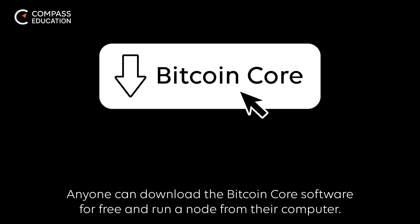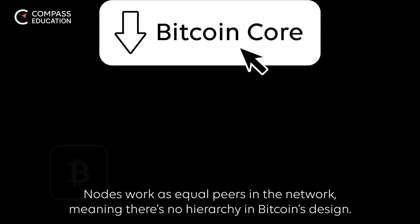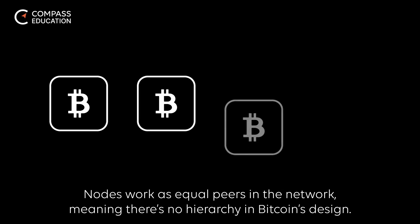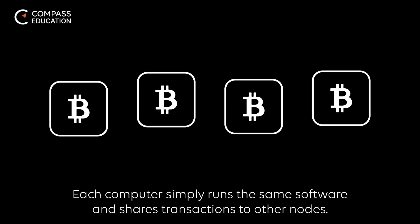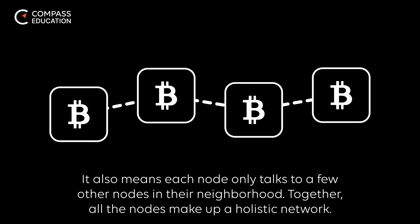Anyone can download the Bitcoin Core software for free and run a node from their computer. Nodes work as equal peers in the network, meaning there's no hierarchy in Bitcoin's design. Each computer simply runs the same software and shares transactions to other nodes. Each node only talks to a few other nodes in their neighborhood. Together, all the nodes make up a holistic network.